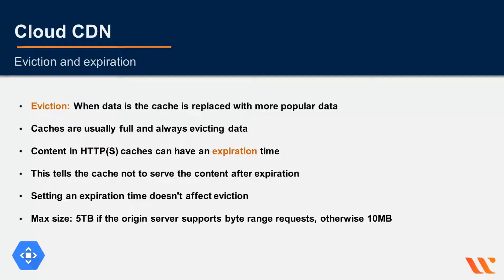The size of the cache depends on whether the origin server supports byte range requests. Byte range requests are the ability to make multiple calls to the server to request partial data. Cloud Storage supports this, and for instances it depends on your configuration. There is a max size of 5 terabytes if the origin supports byte range requests; otherwise it's 10 megabytes.